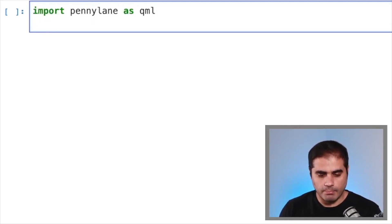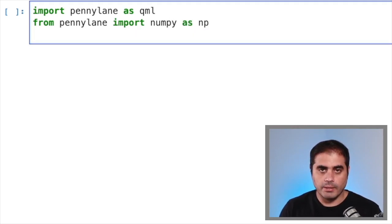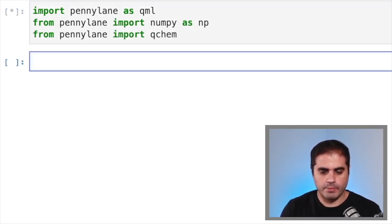We will also be needing NumPy. So from PennyLane, we import the NumPy library as NP. And finally, we are going to be doing quantum chemistry. All the quantum chemistry functionalities in PennyLane are done through the QChem library. So from PennyLane, we import QChem. Shift-Enter. And we've imported all the relevant libraries.